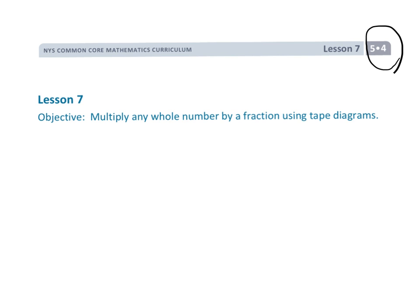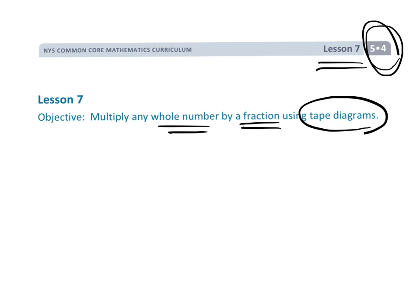This is Grade 5, Module 4, Lesson 7, where we are going to learn how to multiply any whole number by a fraction. We're going to continue using tape diagrams rather than a standard algorithm, because right now we want students to be making sense of the math rather than blindly following an algorithm.